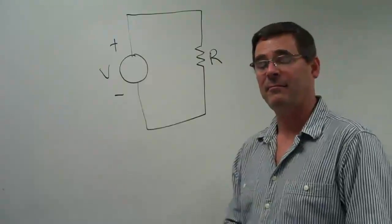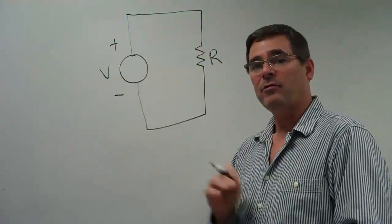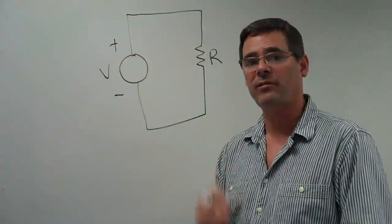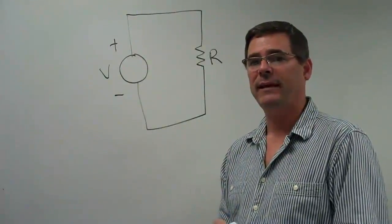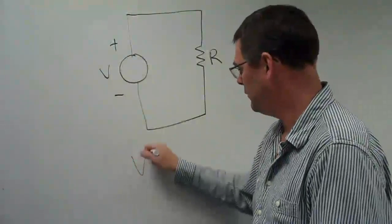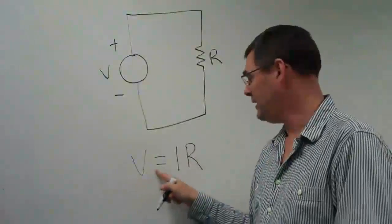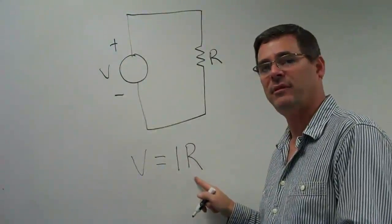There's the schematic of my setup. I'm also going to want to measure the current through the resistor and the voltage across the resistor to prove the relationship of Ohm's Law. V equals IR. Voltage equals current times resistance.